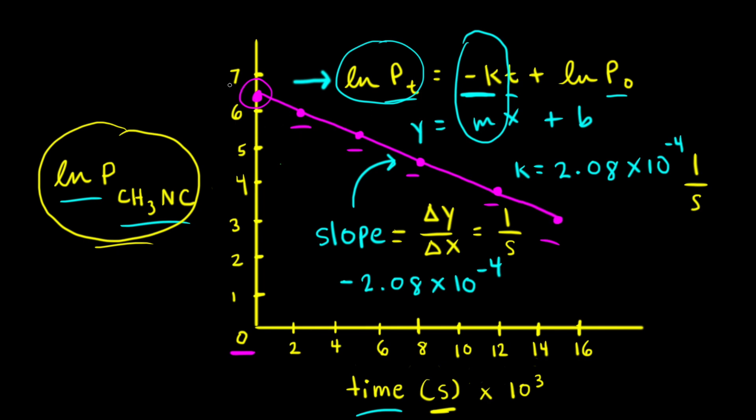Finally, since we got a straight line when we graphed the natural log of the pressure versus time, we know that this data is for a first-order reaction. Therefore, we've proved that the transformation of methyl isonitrile to acetonitrile is a first-order reaction.